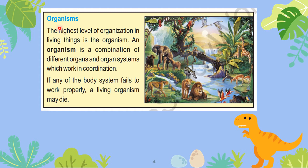Organisms are the highest level of organization in living things. Above organisms, we have population, species, and community. The highest level of organization in living things is the organism. An organism is a combination of different organs and organ systems.